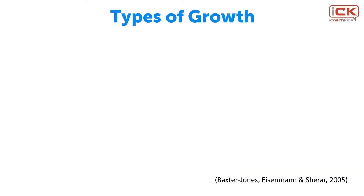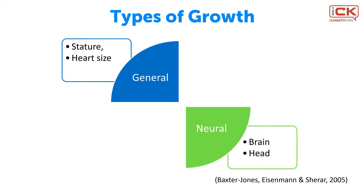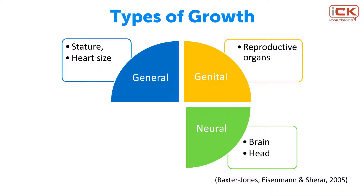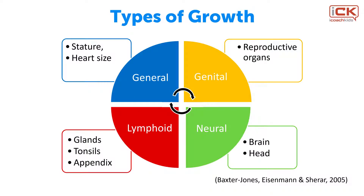There are 4 main types of growth which occur in the body. First, general growth — this includes changes in the size of the body and its parts and includes areas such as height and heart size. Second, neural growth — this relates to changes in the size of the head and the brain. Third, genital growth — this refers to changes in the reproductive organs. And fourth, lymphoid growth — this is related to changes in the lymphoid system such as the glands, the appendix, and the tonsils.